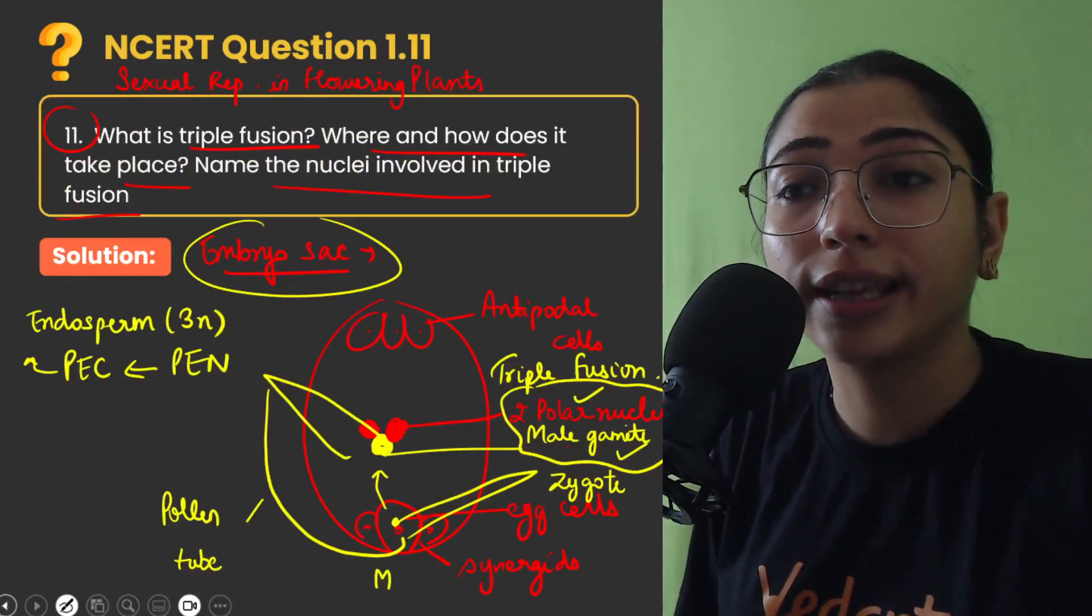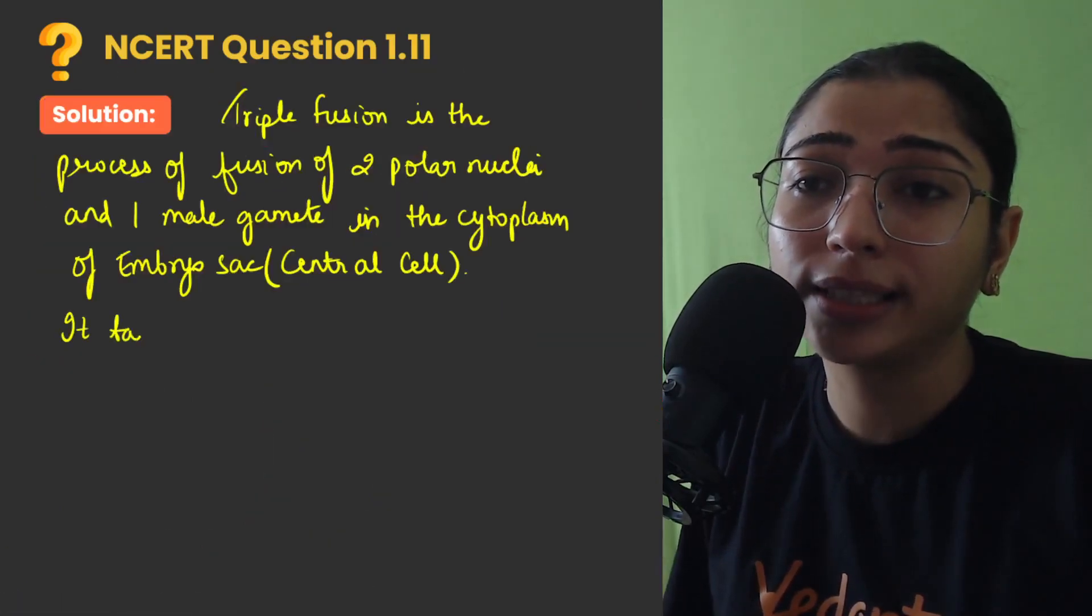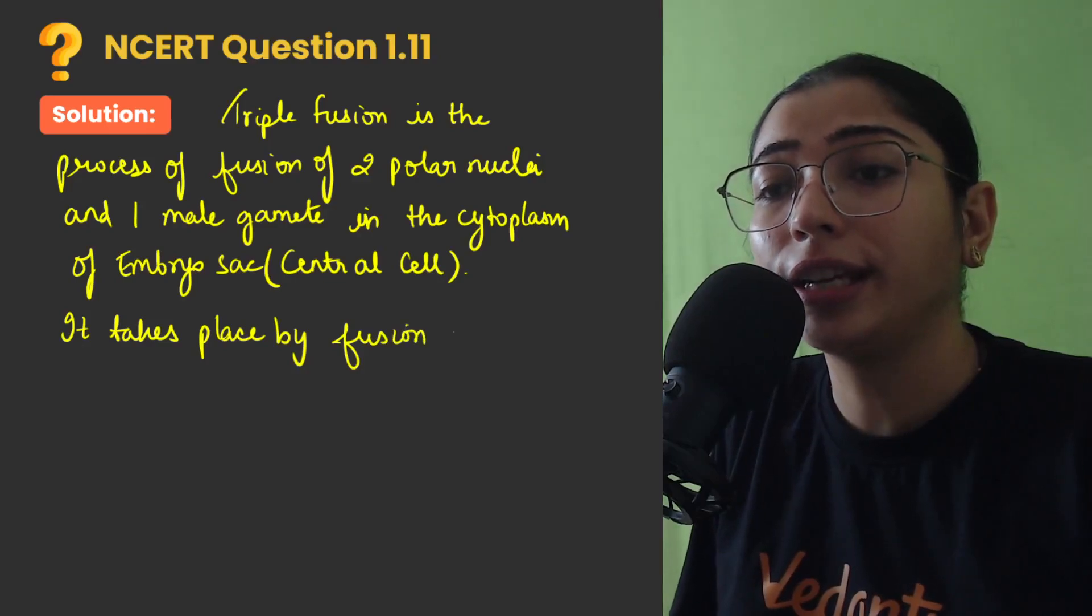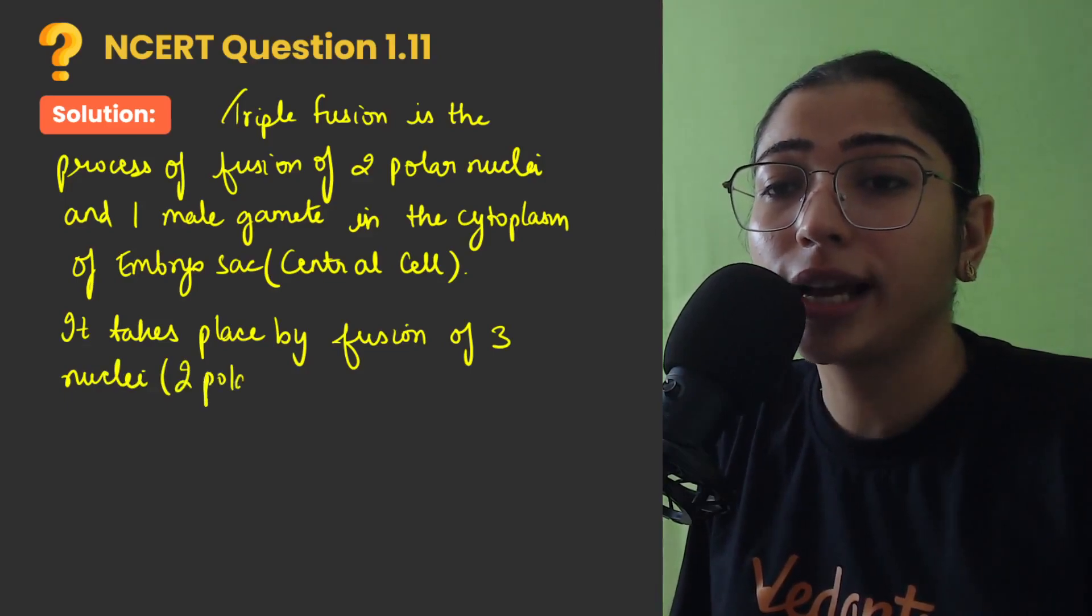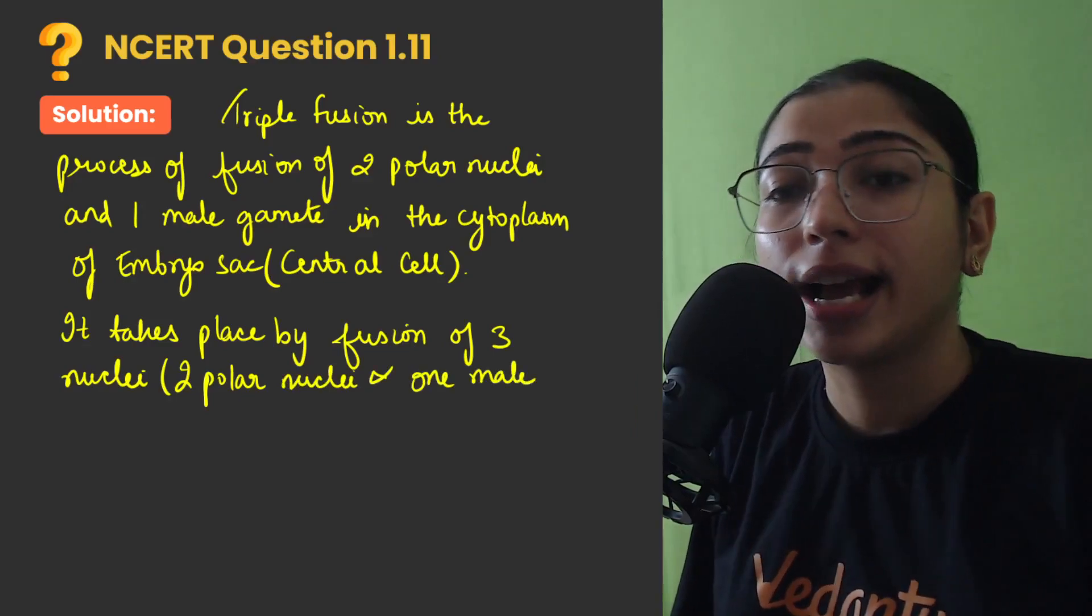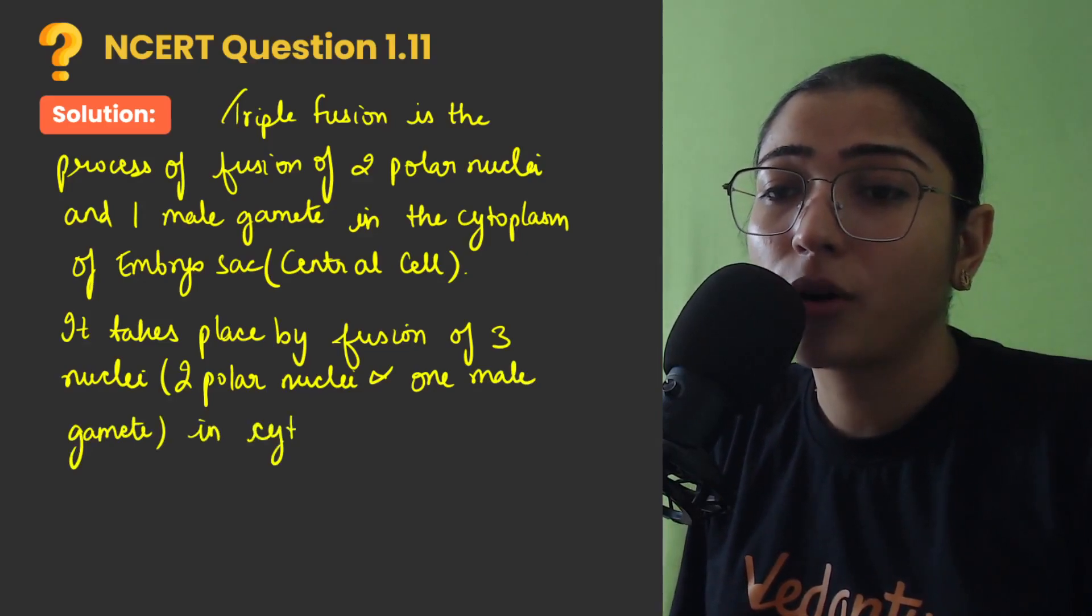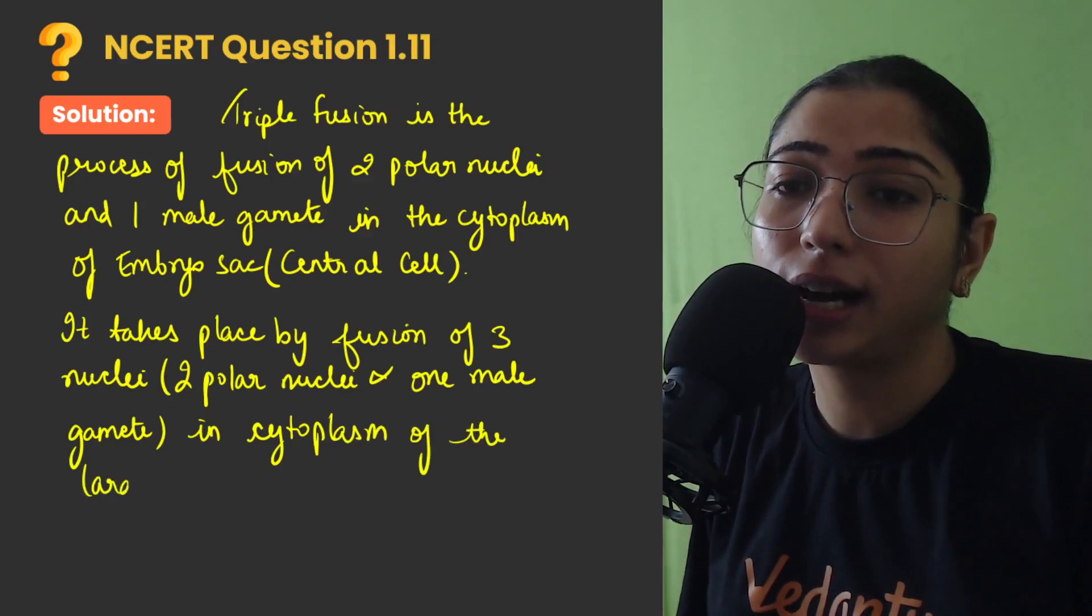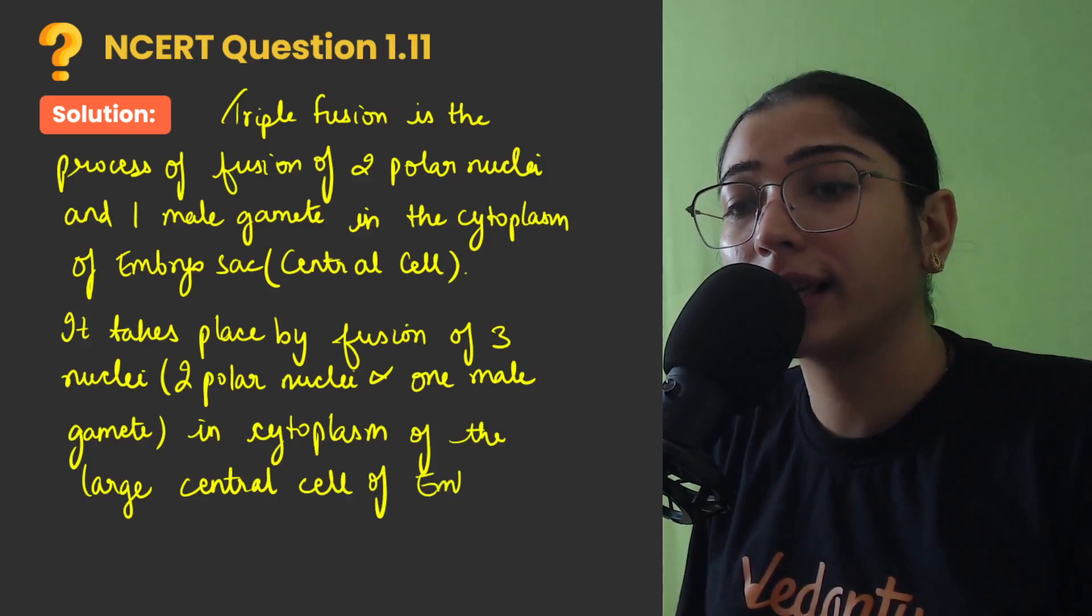Second question that they had asked is, where and how does it take place? So we have already written, it takes place by fusion of 3 nuclei, that is 2 polar nuclei and 1 male gamete. And where is it taking place? In cytoplasm of the large central cell of embryo sac, central cell within embryo sac.